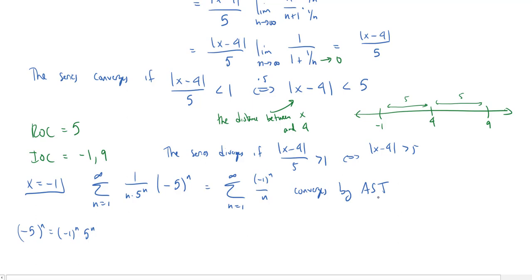To apply the alternating series test we need to check: the sequence (ignoring the alternating part) must be positive, and it must converge to zero. Indeed, 1/n is always positive for n starting at 1, and 1/n converges to zero as n goes to infinity. So we get convergence at the left endpoint, and we can use a square bracket there.